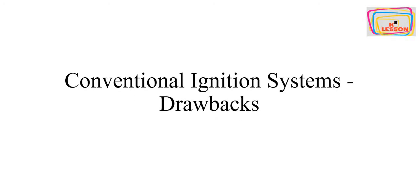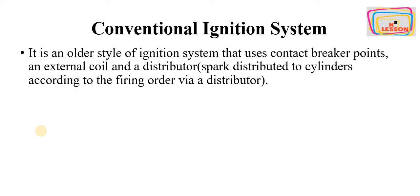Hello and welcome. Today's topic of our lecture is conventional ignition system drawbacks. Before discussing the drawbacks, let's have a brief introduction of the conventional ignition system and electronic ignition system. The conventional ignition system is an older style that uses contact breaker points, external coils, and a distributor to distribute spark to the spark plugs according to the firing order.